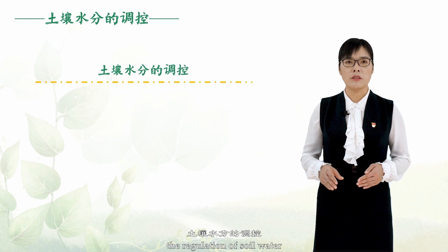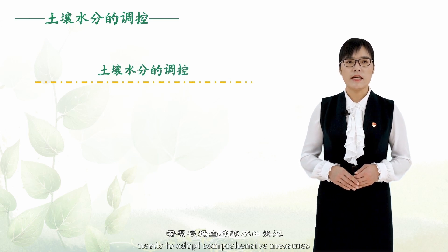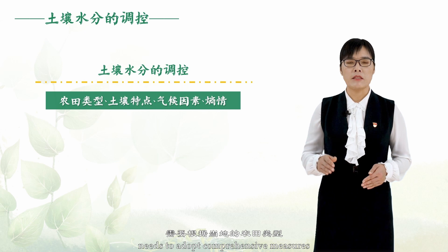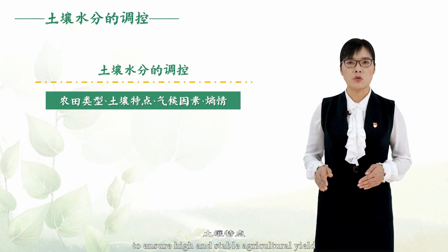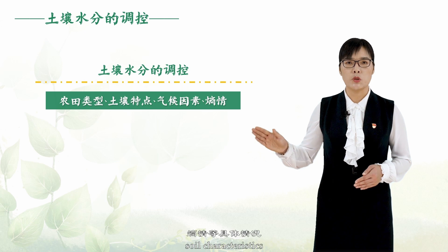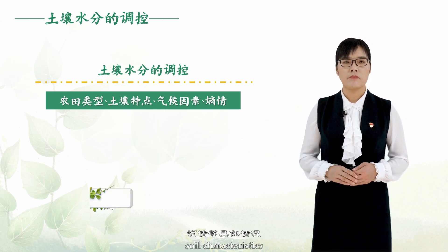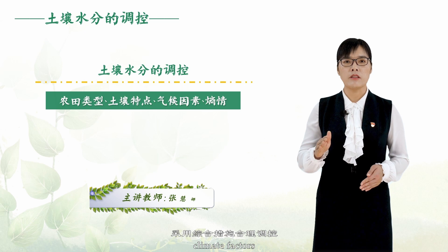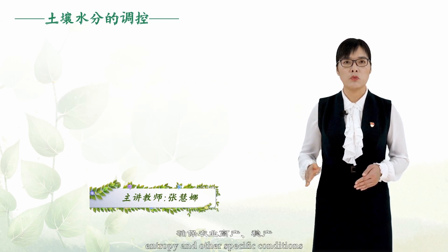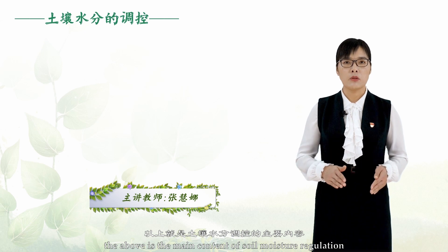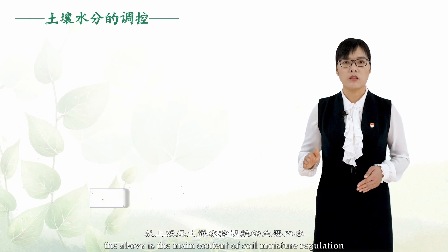9. The regulation of soil water needs to adopt comprehensive measures to ensure high and stable agricultural yield. According to local farmland types, soil characteristics, climate factors, and other specific conditions, the appropriate combination of measures should be selected. The above is the main content of soil moisture regulation.